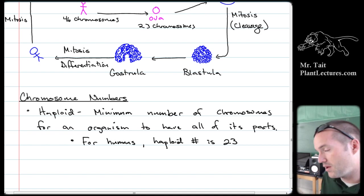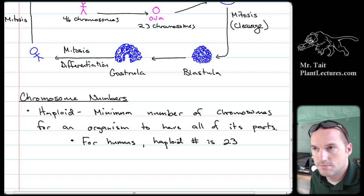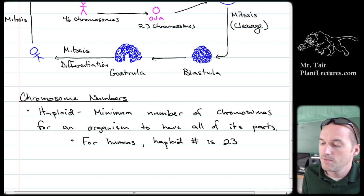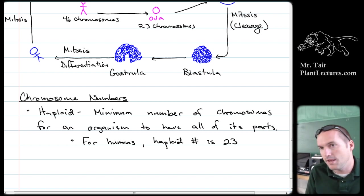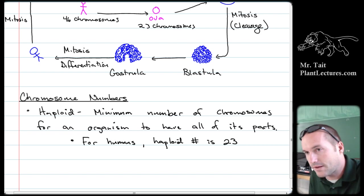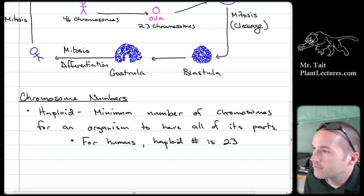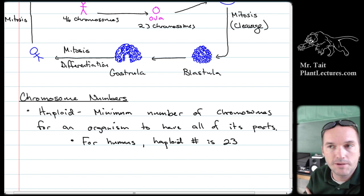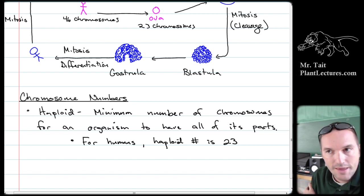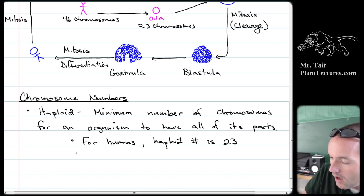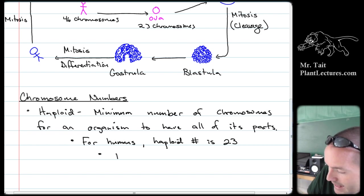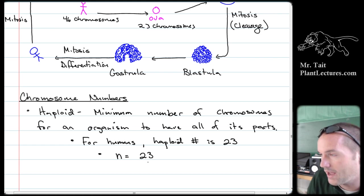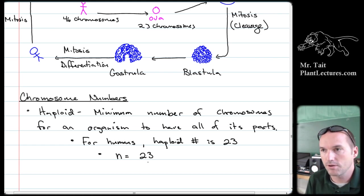The 23rd chromosome is the sex chromosome — it can be either X or Y. Two X chromosomes makes you female; an X and a Y makes you male. We write the haploid number as N = 23, where N represents the haploid number of chromosomes.